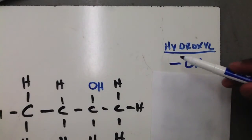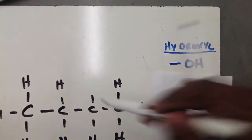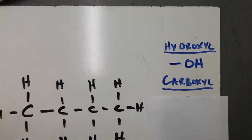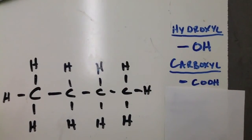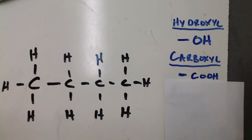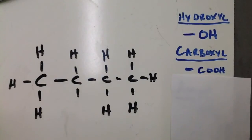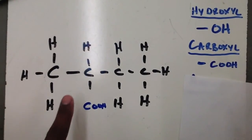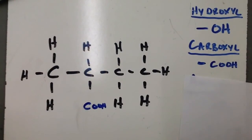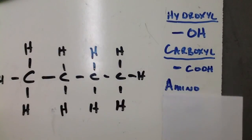We're going to talk about three different functional groups that you'll need to commit to memory. The first is the hydroxyl group (–OH). The second is called the carboxyl group, which contains a carbon, two oxygens, and a hydrogen. If we substitute this carboxyl group in place of any hydrogen in the hydrocarbon, that molecule becomes a substituted hydrocarbon.